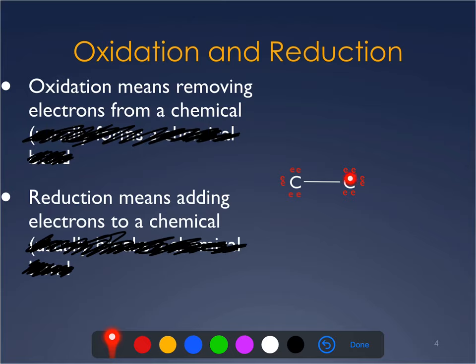Here we have two carbons attached by a single bond. This bond is a pair of electrons shared between the two carbons. The basic rule of chemistry is that atoms want to have eight electrons around them. This carbon has six electrons of its own, and the two shared electrons bring it to eight. The other carbon is the same — six of its own plus the two shared to get to eight.